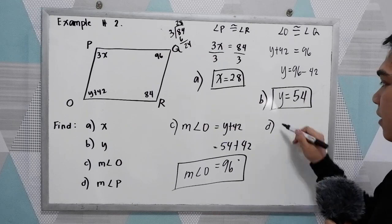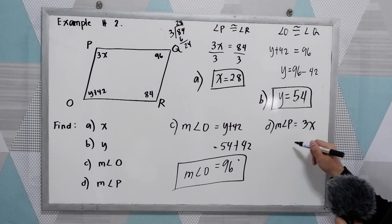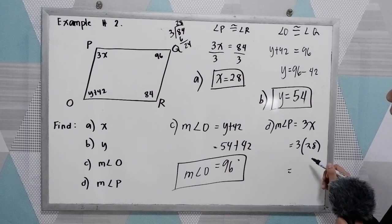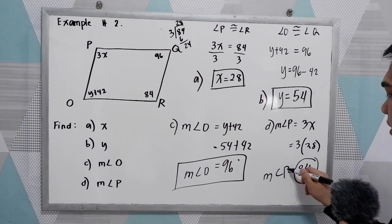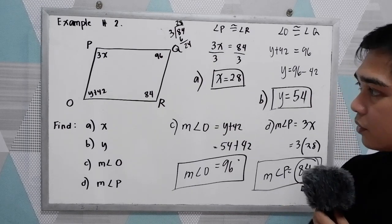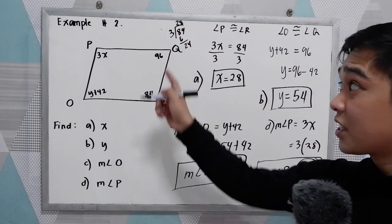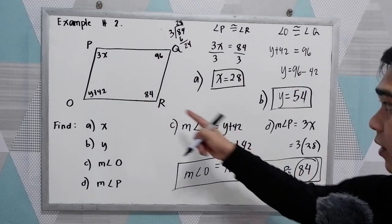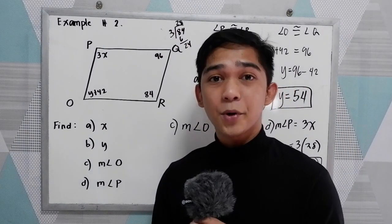For letter D, measure of angle P, that is 3x. So 3 times 28 equals 84. Measure of angle P is 84. To verify using property number 2: angle O is 96 and angle Q is 96 — opposite angles are congruent. Angle P is 84 and angle R is 84 — they are the same. That proves our property number 2: opposite angles of a parallelogram are congruent.